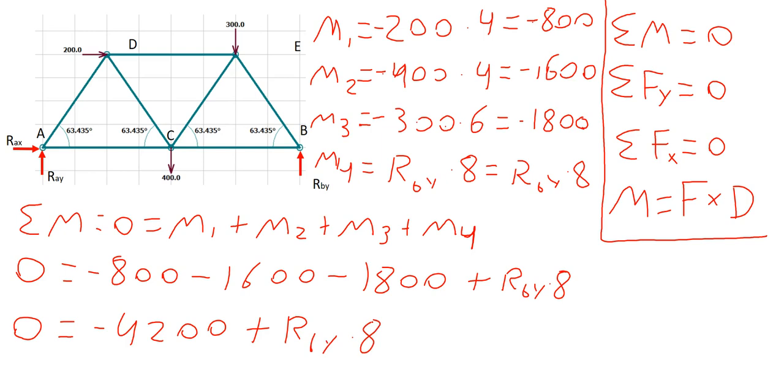Next, we need to isolate RBY, and this is ultimately the variable that we need to solve for. So what we're going to do is we're going to bring 4,200 over to the other side, and we get RBY times 8 is equal to 4,200. As we divide both sides by 8, we get our final value is RBY is equal to 525 pounds.